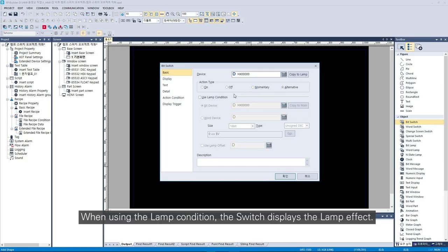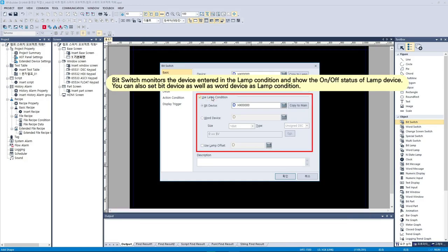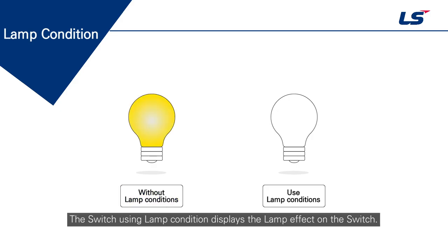When using the lamp condition, the switch displays the lamp effect. The switch without lamp condition only turns on or off the lamp object. The switch using lamp condition displays the lamp effect on the switch.